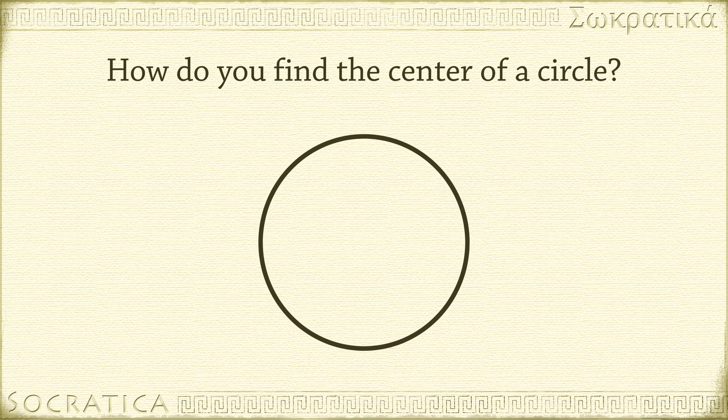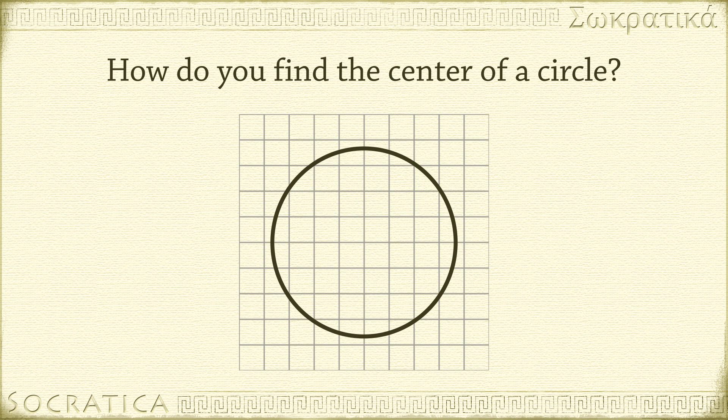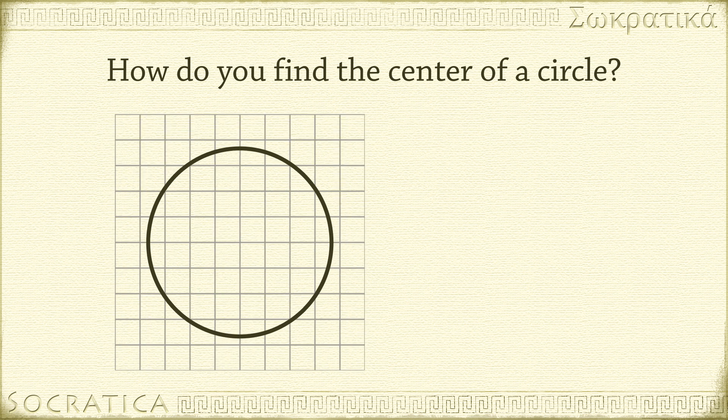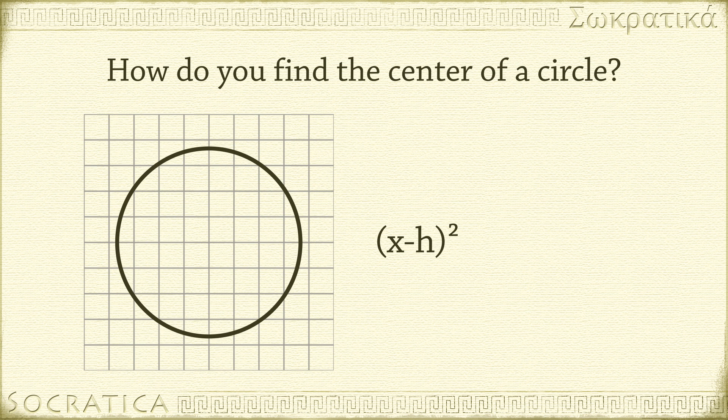A more respectable approach is to find the equation of this circle. In analytic geometry, you learn that a circle is the set of solutions to an equation of the form x minus h squared plus y minus k squared equals r squared, where the point h,k is the center and r is the radius.